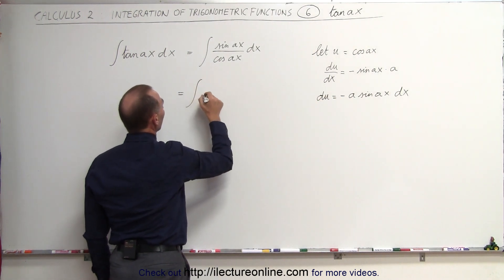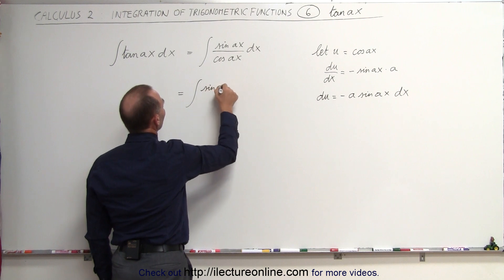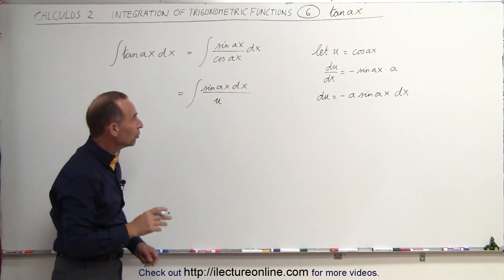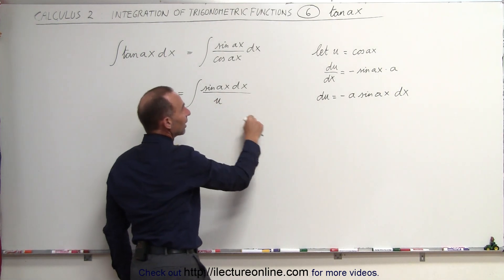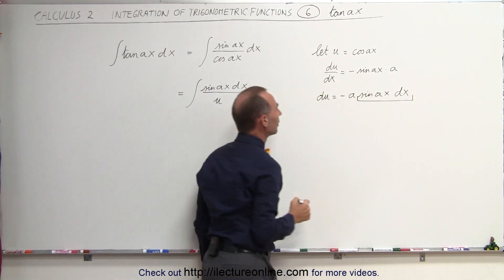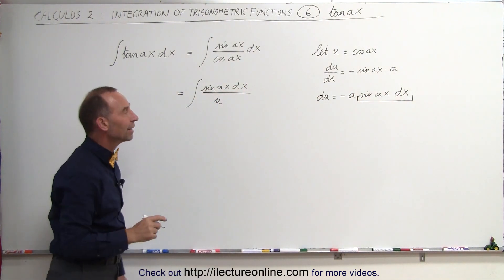This is equal to the integral of the sine of Ax dx divided by the cosine of Ax, which can now be written as u. Now take a look at the numerator. The sine of Ax dx is this portion right here. What we don't have is a minus A.